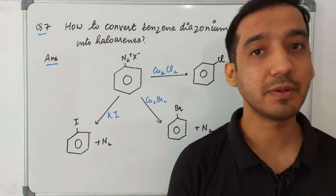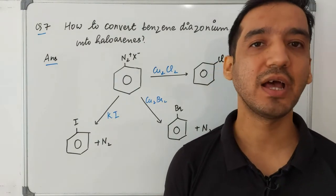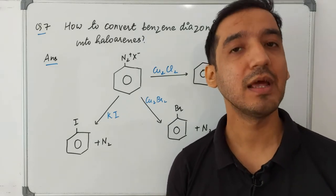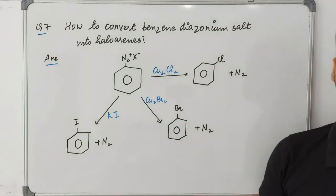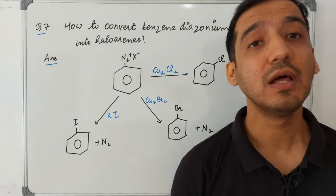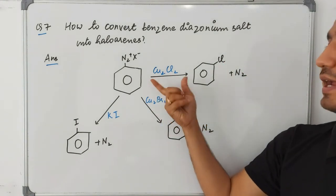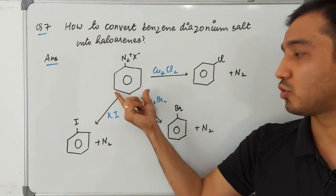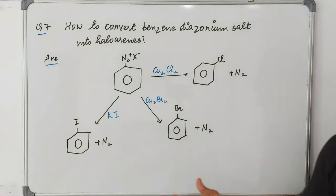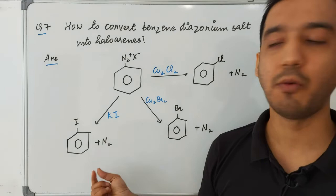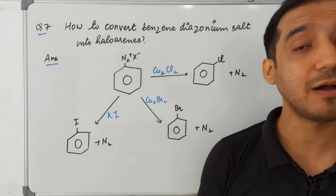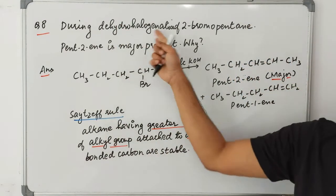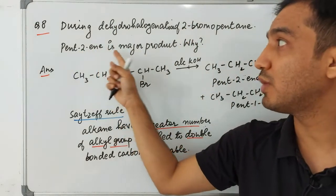Question seven: how to convert benzene diazonium salt into haloaryne? You can prepare benzene diazonium salt using Sandmeyer's reaction. If you react benzene diazonium salt with Cu₂Cl₂ it gives chlorobenzene; with Cu₂Br₂ it gives bromobenzene; and with KI it gives iodobenzene. So you can prepare all three types of haloaryne using these reactions.